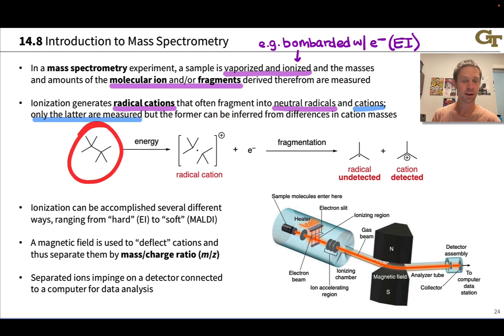This is the structure of the molecule minus one electron, known as the molecular ion because it's the structure of the molecule just lacking one electron.